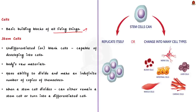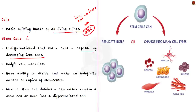Stem cells are special human cells that are able to develop into many different cell types, meaning they are capable of developing into cells that serve numerous functions in different parts of the body. Most cells in the body are differentiated cells — each has a specified purpose and can only serve that purpose in a particular organ. For example, red blood cells are specifically designed to carry oxygen through the blood. But stem cells are undifferentiated and act as the body's raw material.